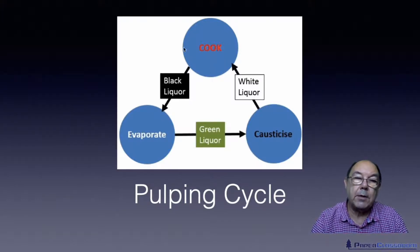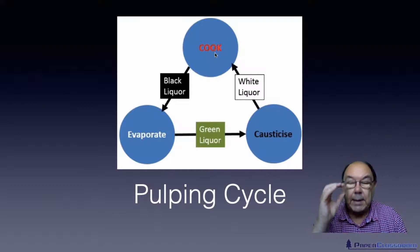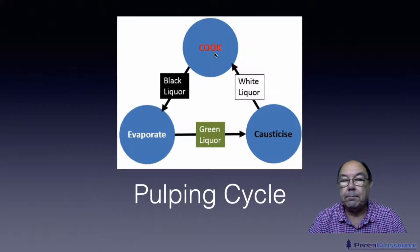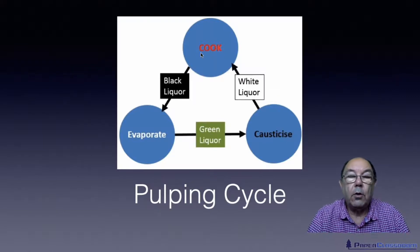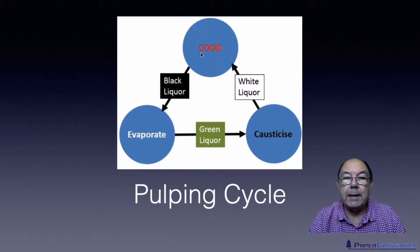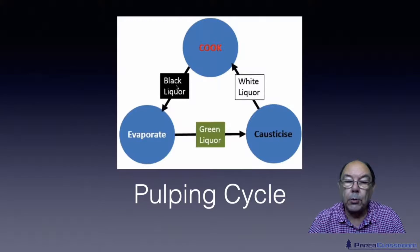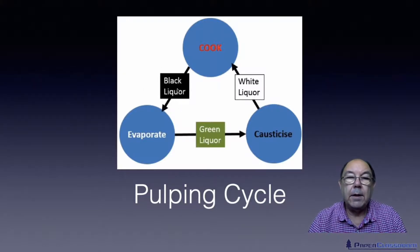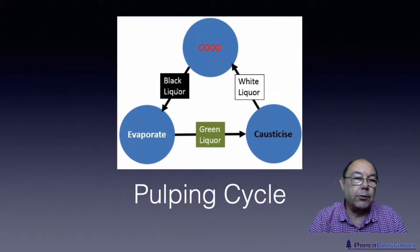In the cooking vessel we introduce the chips and a mixture of cooking chemicals called white liquor. It's cooked for several hours at high temperatures and high pressures, which dissolves most of the lignin. We then separate out the lignin solution — now called black liquor. It's actually incredibly dark brown and smells really horrible — that's the black liquor.